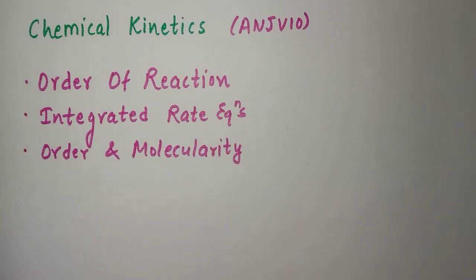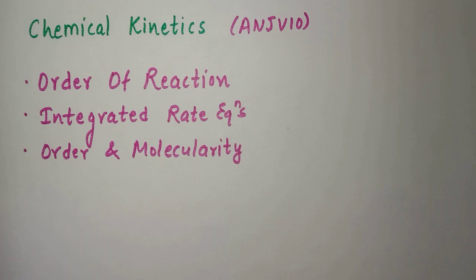If you want the unlock code, it's NJV10. There are some important topics in this chapter, like the order of reaction, integrated rate equations, order and molecularity — and the difference between them is also very important. I've already covered all these topics, so go to Ann Academy and you can see those lectures.